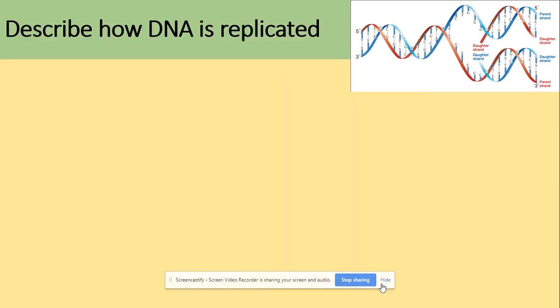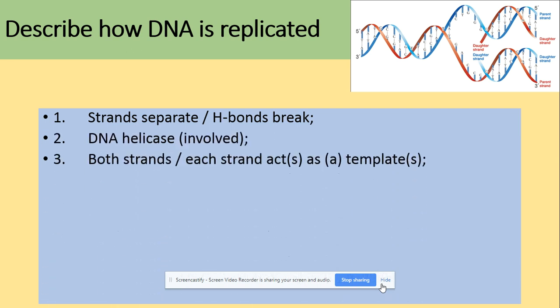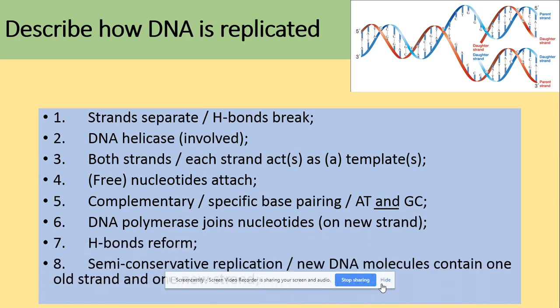So describe how DNA is replicated. Key words: strands separated by breaking hydrogen bonds by DNA helicase. Both strands act as a template. Free nucleotides will attach. Complementary base pairs—adenine and thymine, guanine and cytosine. DNA polymerase joins them by reforming the phosphodiester bonds. Obviously hydrogen bonds will be reformed as well, but the main job of DNA polymerase is to reform phosphodiester bonds.